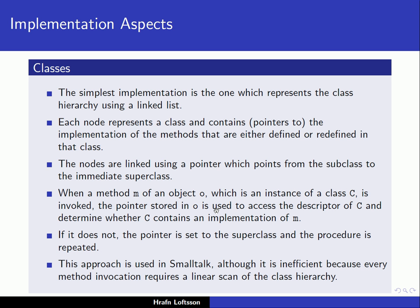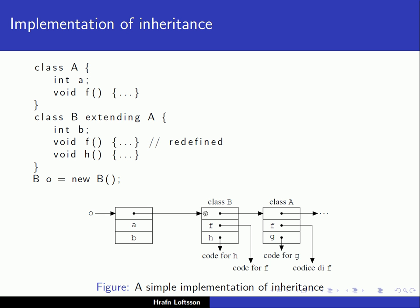How are the classes implemented? The simplest implementation represents the class hierarchy using a linked list. Each node in the list represents a class and contains pointers to the implementation of the methods that are either defined or redefined in the class. The nodes are linked using a pointer which points from the subclass to the immediate superclass. So we have a pointer from class B to class A, and inside the class descriptor we have a pointer to the corresponding code — a pointer to the code for F and a pointer to the code for H.